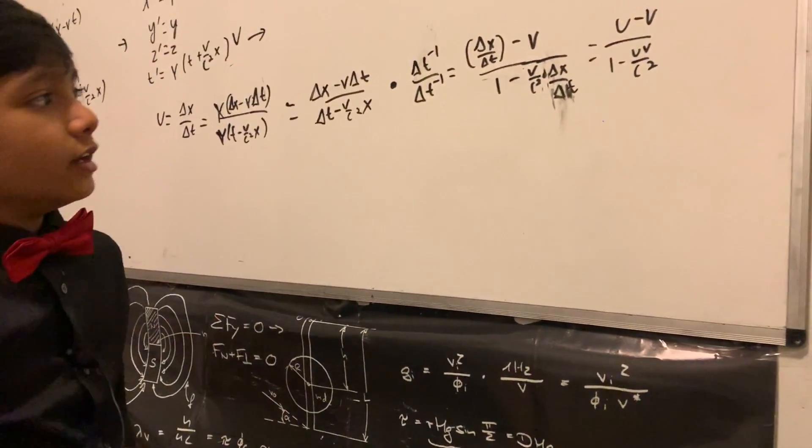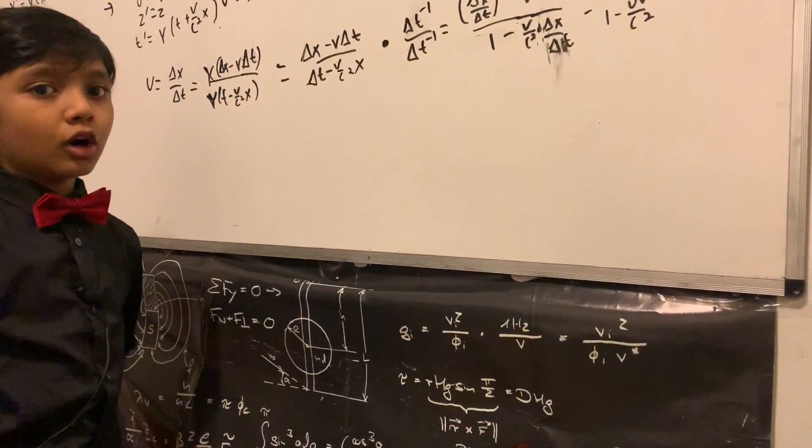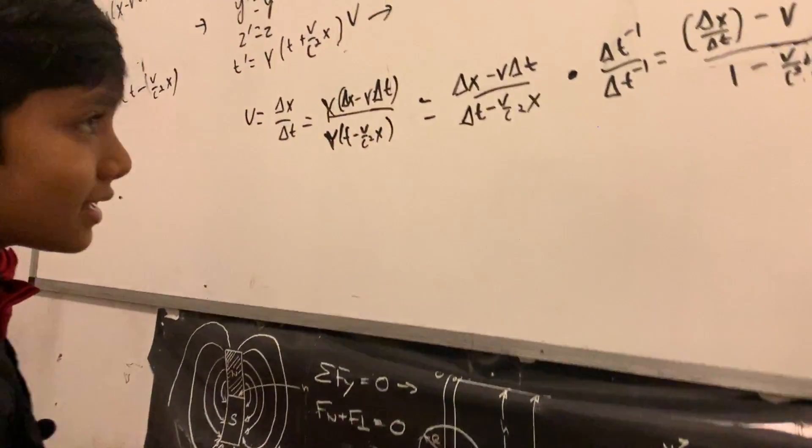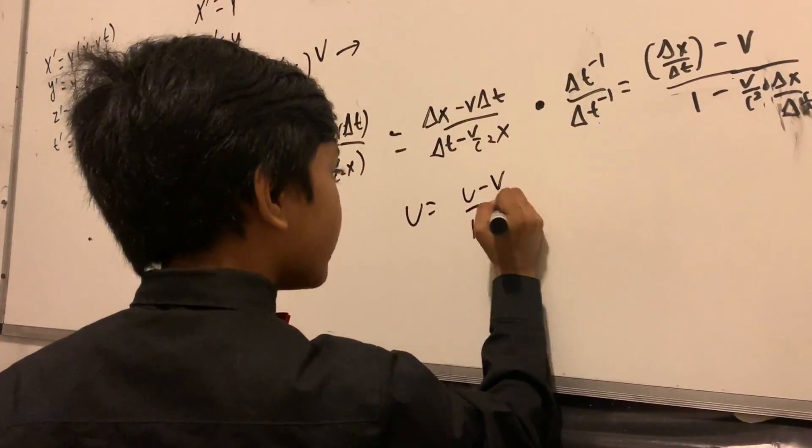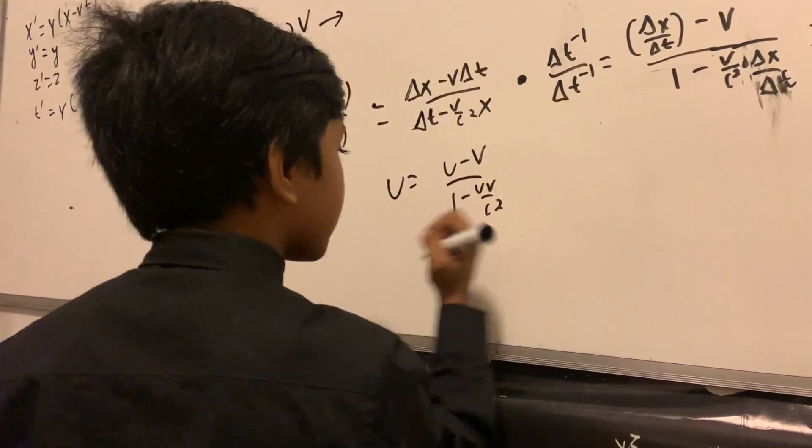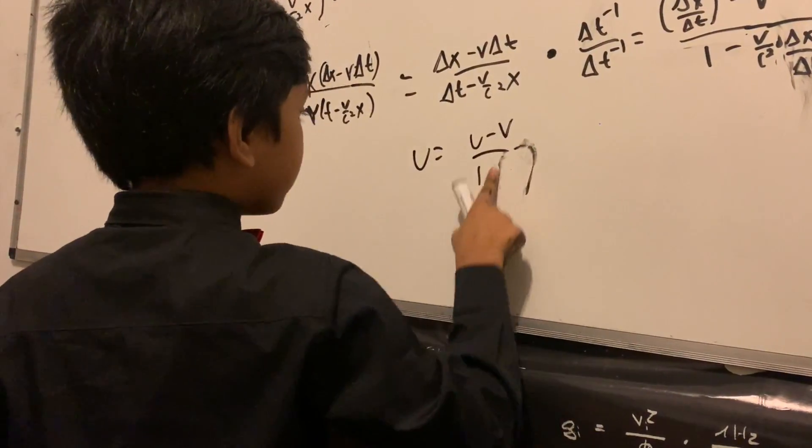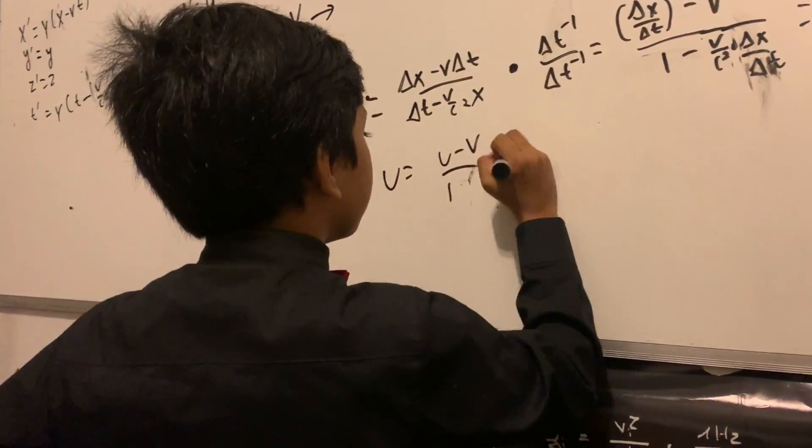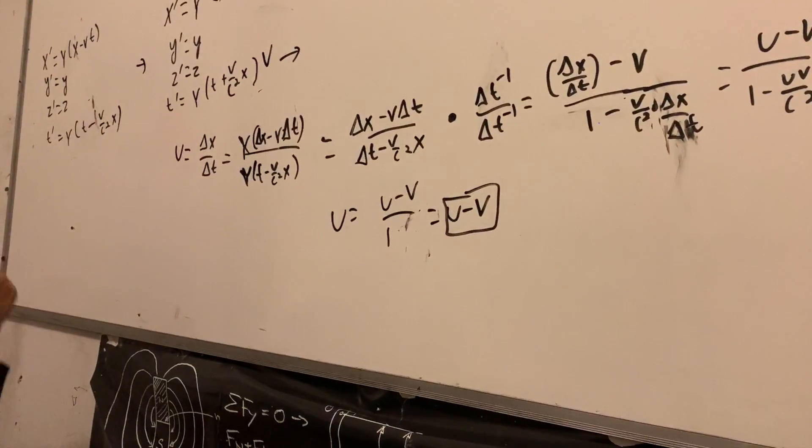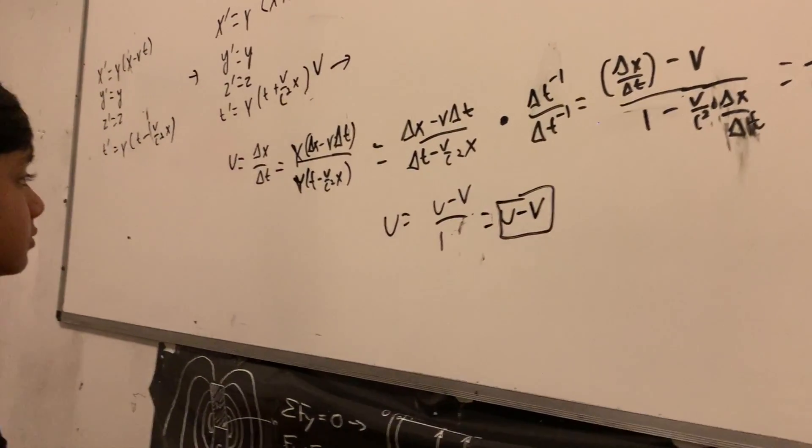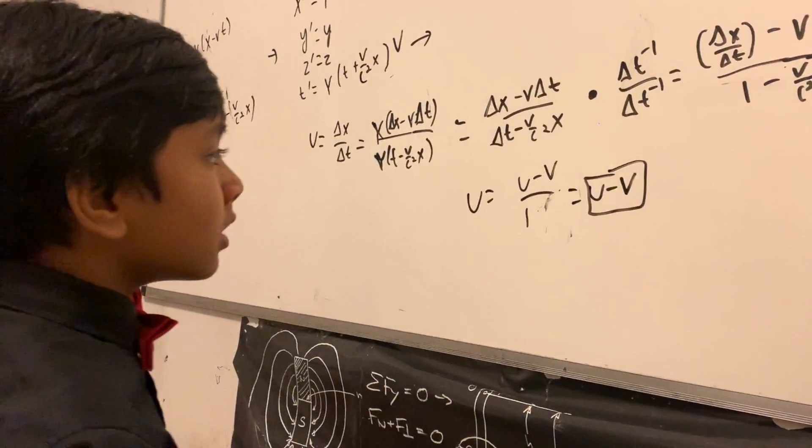Now when you're moving at relatively small speeds, this reduces to regular Galilean equations. u is equal to u minus v over one minus uv over c squared. Now this is going to be a very negligible number, which just leaves us with u minus v, which is a regional number, u minus v basically.